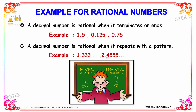A decimal number is a rational number when it terminates or ends — for example: 1.5, 0.125, and 0.75. A decimal number is also rational when it repeats with a pattern, such as 1.333... or 2.4555... where 3 and 5 repeat respectively. These are all considered rational numbers.